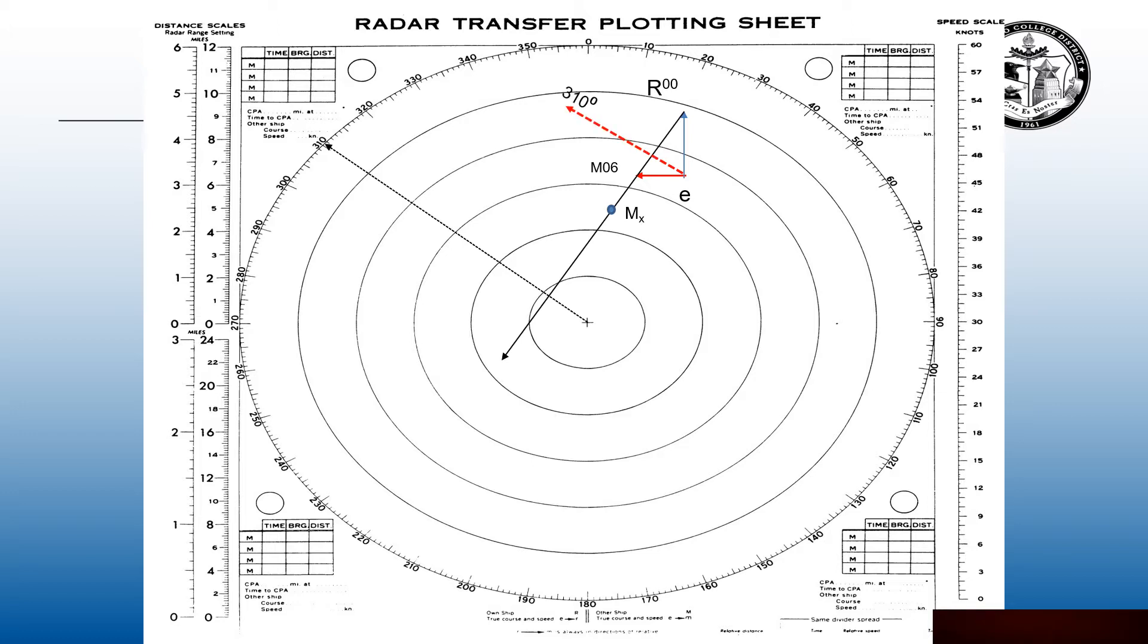Instead of us changing course, stabbing E and swinging R to starboard, this time the contact is going to change course. So we're going to get our compass, stab E and swing M06 to starboard since they're going to change from 270 to 310 degrees, and that's going to be an M prime.